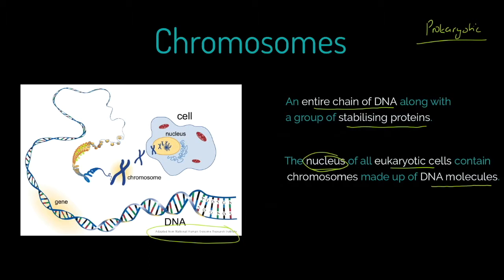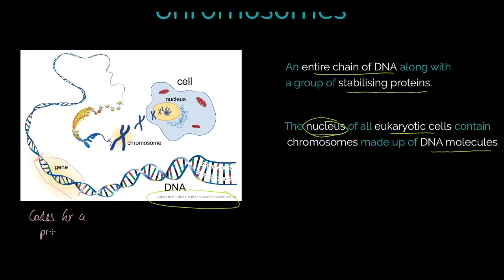Looking at this section of the chromosome, we could say this is what we call a gene. Remember that a gene codes for a protein — that's the role it undertakes. So what we can say, just looking at this illustration, is that each chromosome contains a large number of genes.